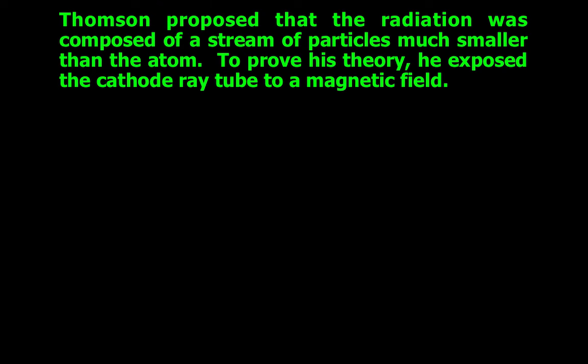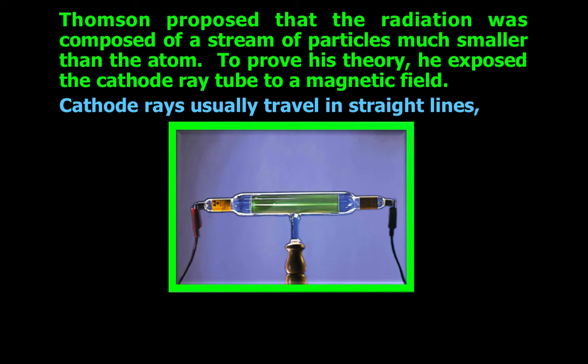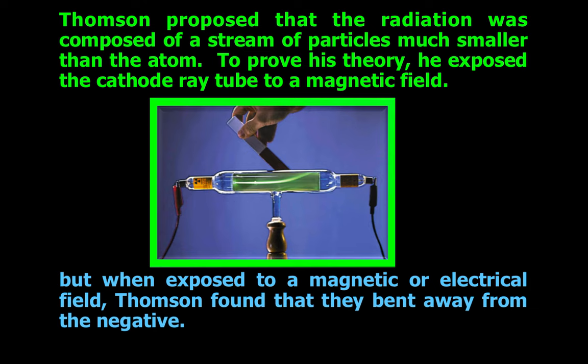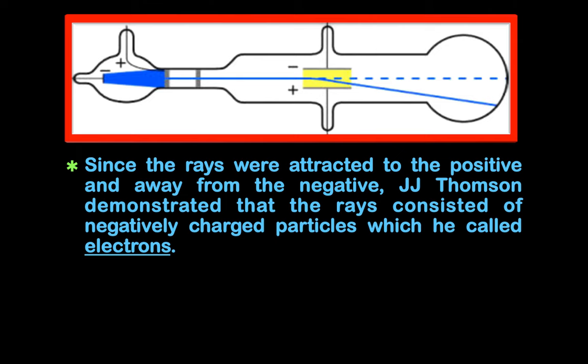To prove his theory, he exposed the cathode ray tube to a magnetic field. Cathode rays usually travel in straight lines, but when exposed to a magnetic or electrical field, Thomson found that they bent away from the negative. Since the rays were attracted to the positive and away from the negative, J.J. Thomson demonstrated that the rays consisted of negatively charged particles, which he called electrons.